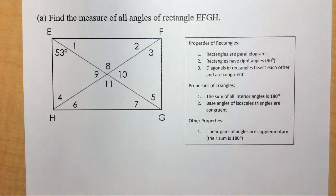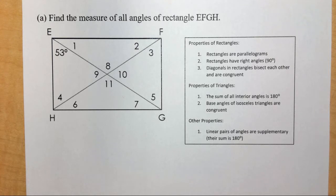In this problem — question number 33 on the review — we're given a rectangle with two diagonals drawn through it, which have created 12 different angles. We're only given one angle and we're asked to find the measures of all the missing angles. There are a couple of things we need to know before we start.